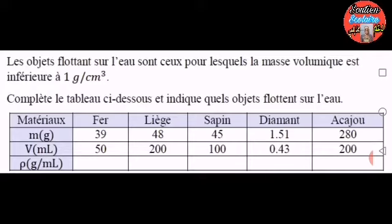La masse en grammes du fer est 39. Du liège, 48. Le sapin, 45. Le diamant, 1,51. L'acajou, 280. Le volume en millilitres du fer est 50. Du liège, 200. Le sapin, 100. Le diamant, 0,43. Et l'acajou, 200 millilitres.